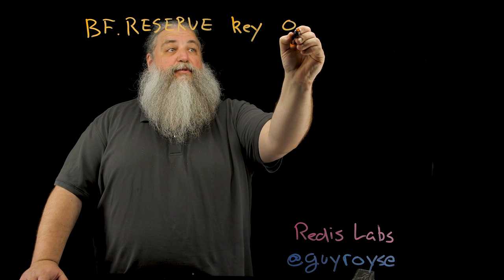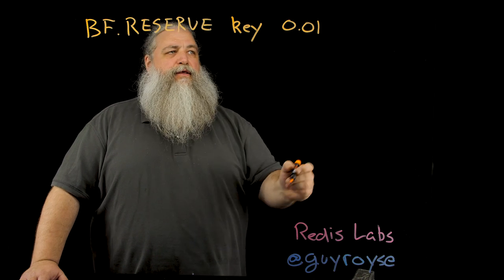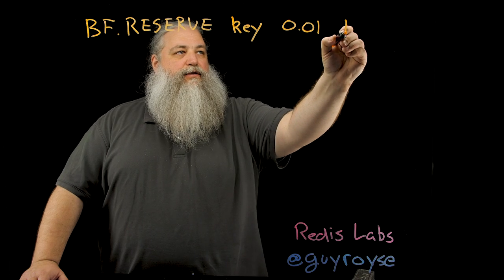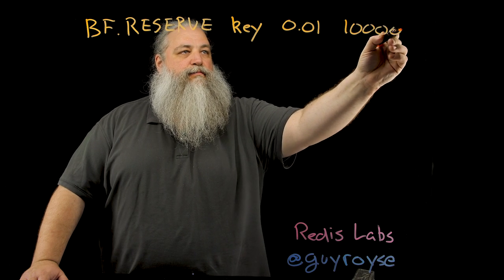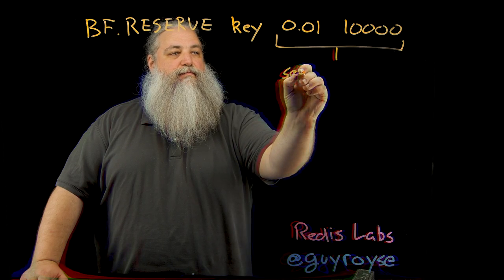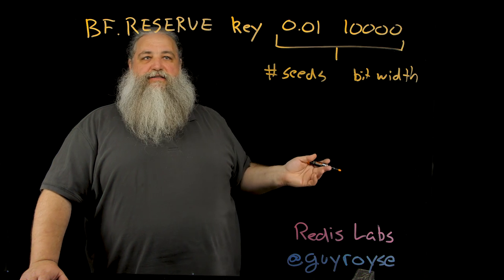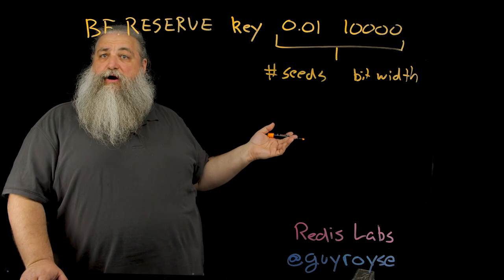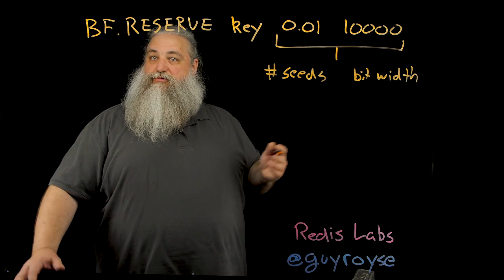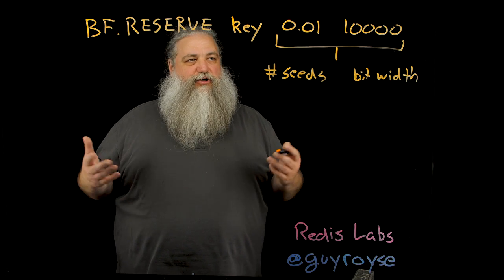And then you pass in two values. You pass in an acceptable error rate. So in this case, I'm putting 1%, so 0.01. And you pass in how many items you anticipate putting in your bloom filter. So let's say 10,000. So these two values together can be used to compute the number of seeds and the width, the bit width. Very easy. You know what's an acceptable error rate for your application. You know how many things you think you're going to put in there. So you provide those two values. They're things that you as a developer, you as an application engineer know already.